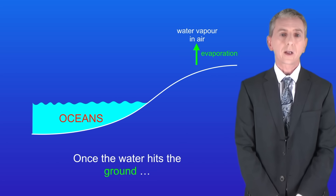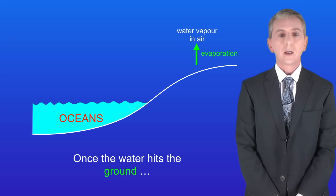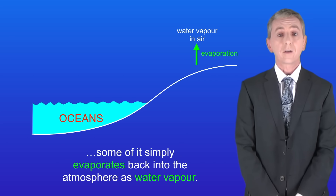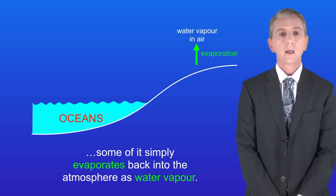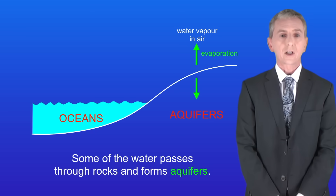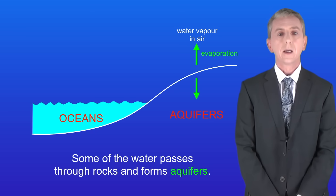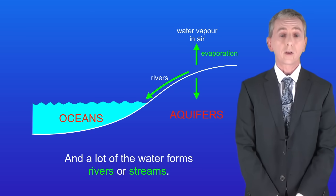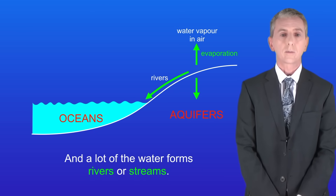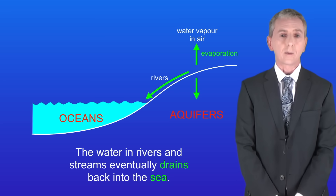Once the water hits the ground, some of it simply evaporates back into the atmosphere as water vapor. Some of the water passes through rocks and forms aquifers, and a lot of the water forms rivers or streams. The water in rivers and streams eventually drains back into the sea.